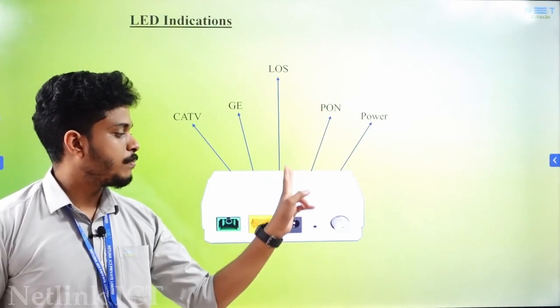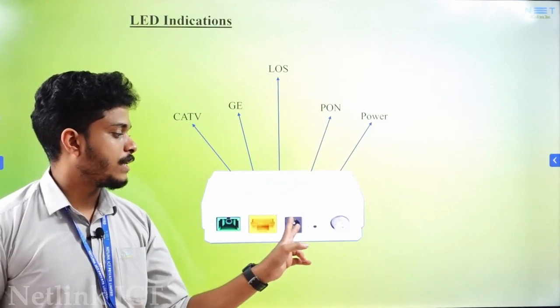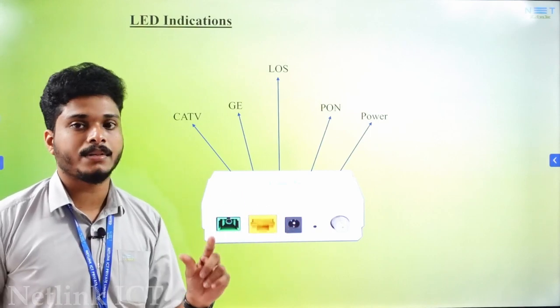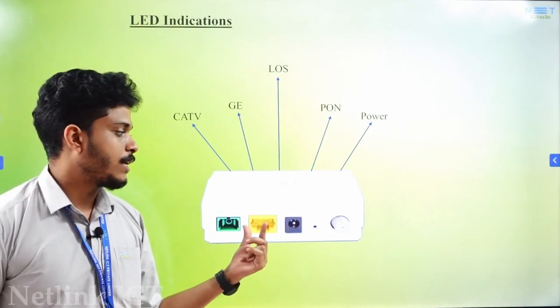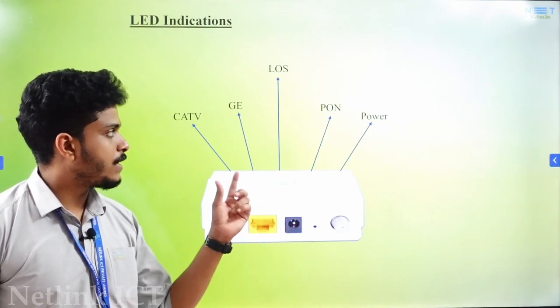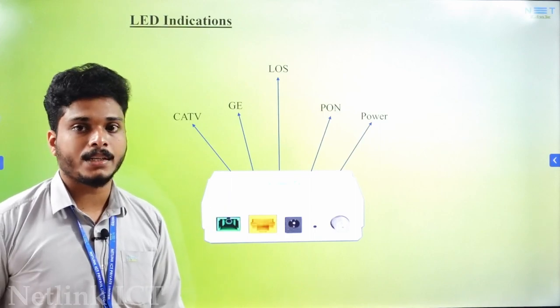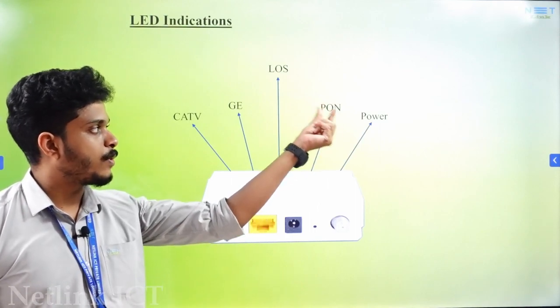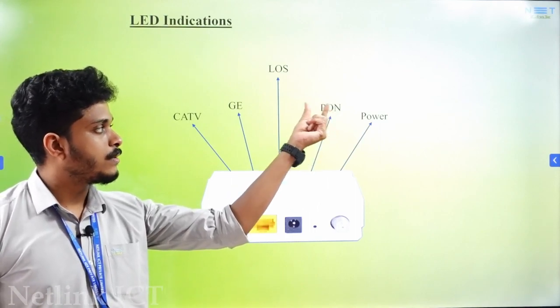The second pin is the PON. What is the PON light? The fiber connectivity indicator is the PON light. PON stands for Passive Optical Network, so the fiber connectivity is indicated by the PON light.